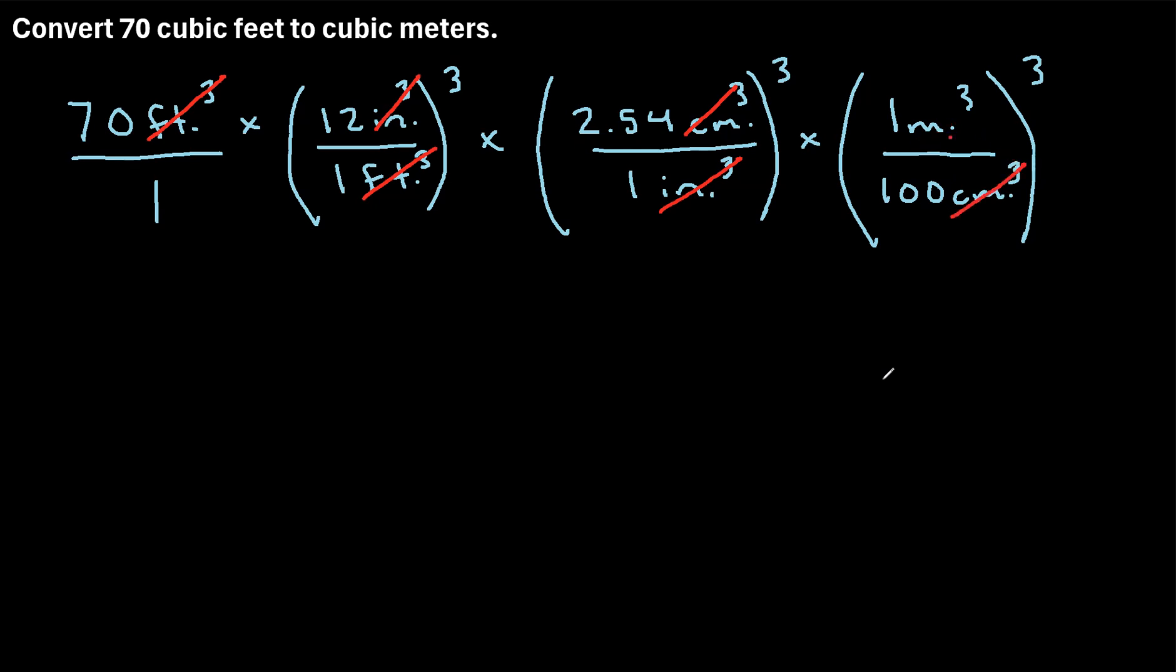And we're just going to be left with meters cubed, which is what we wanted. We can simplify our expression a little bit. Here we have 70 over 1. So that's just 70 times. Here we'll have 12 cubed.